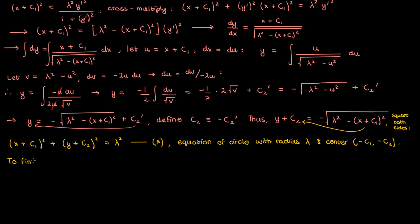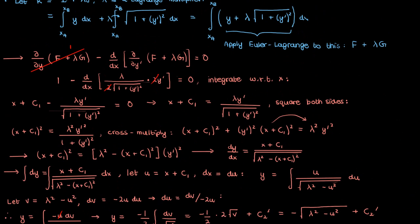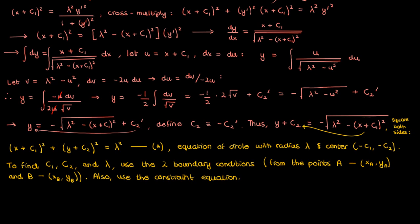Now the c1 c2 and lambda are unknown constants so how do we find them? Well we use the boundary conditions given by the points a and b. At x equals xa y is ya and at x equals xb y is yb. However we need a third equation to solve for all three constants and what equation might that be? That's right it's the constraint equation for the length of the arc connecting a and b. When we solve these three equations we'll find values for our three unknown constants.